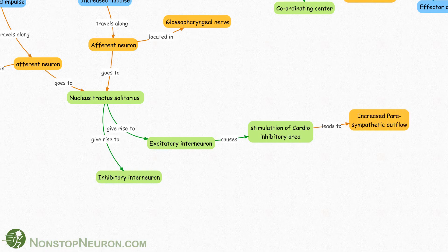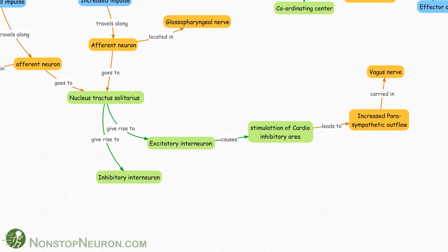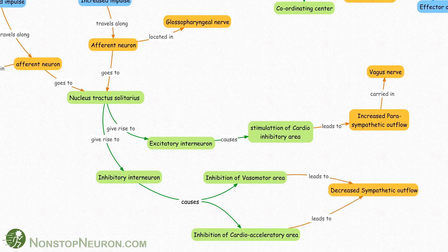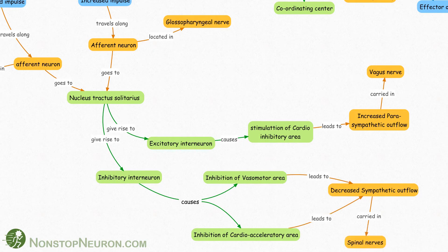This leads to increased parasympathetic outflow which is carried by vagus nerve. Inhibitory interneurons inhibit vasomotor area and cardioacceleratory area. This leads to decreased sympathetic outflow which is carried by spinal nerves.